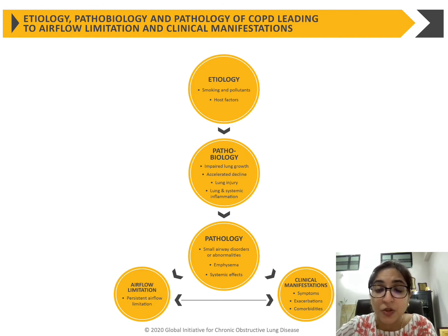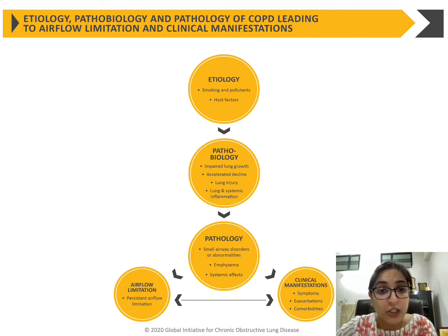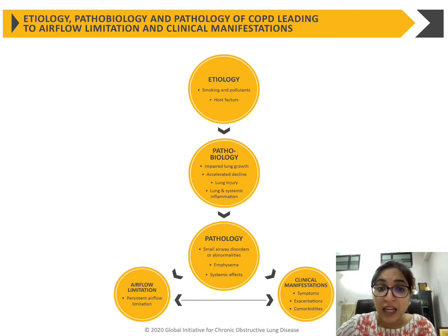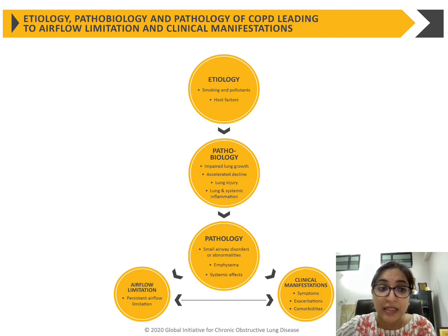These factors lead to disorders in the small airway, emphysematous changes in the lungs, and systemic effects like increased risk of stroke and cardiovascular morbidities. The airflow limitation in COPD is persistent, as against asthma where it is intermittent and seasonal. Together these lead to clinical manifestations and symptoms. This flow chart tells us how COPD develops.